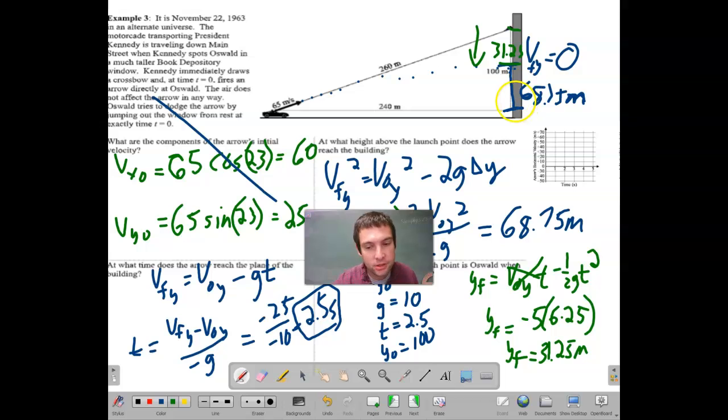He falls down 31.25 meters and the arrow is approaching and will hit the building at 68.75 meters above the ground. Well guess how far above the ground Lee Harvey Oswald is if he's 31.25 meters below 100 meters. Right, the arrow is going to strike him. Mission accomplished.